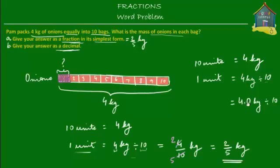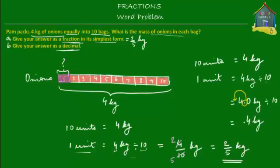You just put a decimal point followed by a zero — the value doesn't change, it still stays 4 kilograms. Now you have to divide 4.0 by 10. When you divide a decimal number by 10, all you do is shift the decimal point one place to the left — one place because there is one zero in the number 10. If you were dividing by 100, you would shift the decimal point two places to the left.